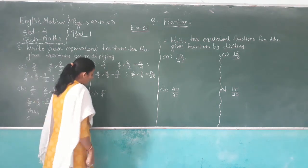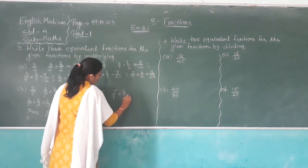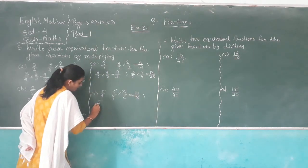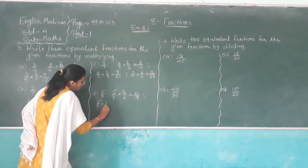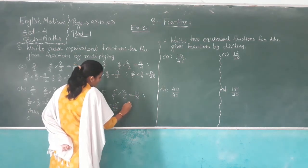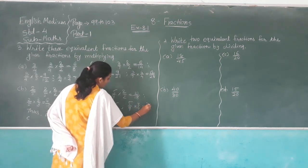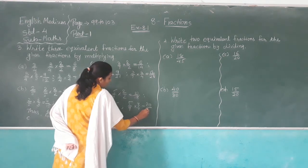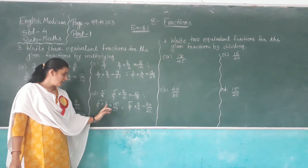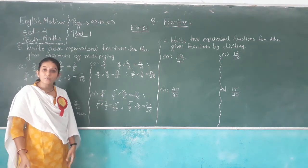Five out of nine multiplied by two over two: five twos are ten, nine twos are eighteen. Five out of nine multiplied by three over three gives fifteen out of twenty-seven. Five out of nine multiplied by four over four: five fours are twenty, nine fours are thirty-six. Thus ten out of eighteen, fifteen out of twenty-seven, and twenty out of thirty-six are equivalent fractions of five out of nine.